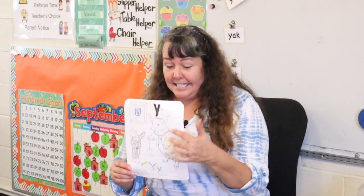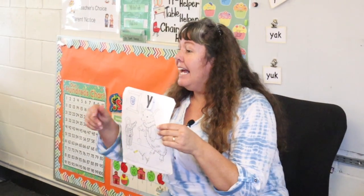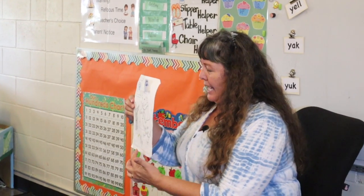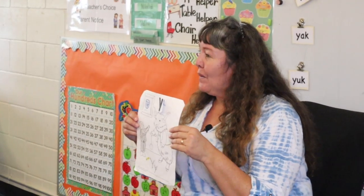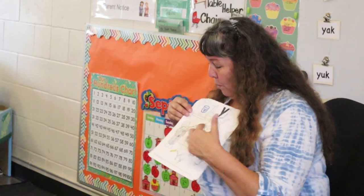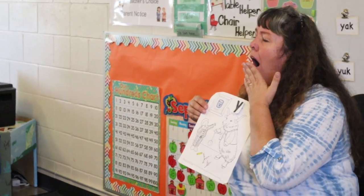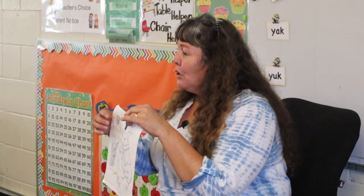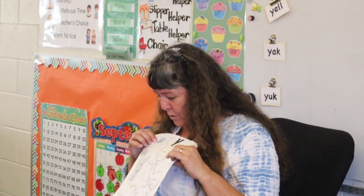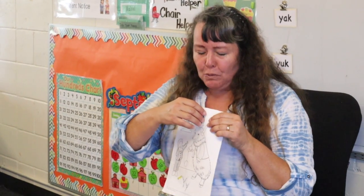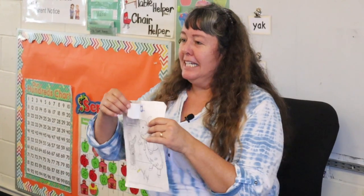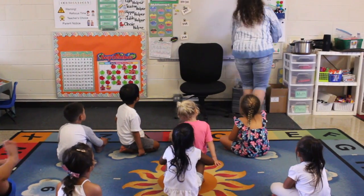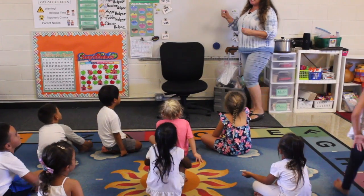Skylar, what do you see that starts with Y? Yak. Kaylani? Yo-yo. What else? What color is that? Yellow. Yeah, yellow. Ty, what else starts with Y? Oh boy, what is he doing? Yawning. And do you know what this is that we eat? Yogurt or yam starts with Y too. And I have something behind this hidden window that starts with Y — he's yelling.